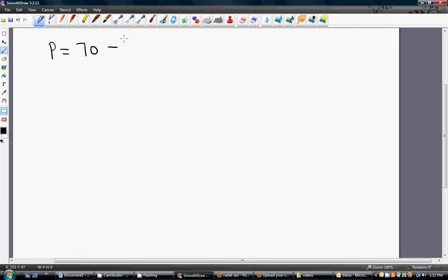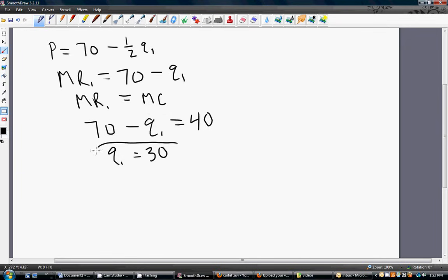Rewriting firm 1's inverse demand equation. Getting marginal revenue for firm 1. And now setting marginal revenue equal to marginal cost. Marginal cost is just 40, just like the Cournot problem we did. Solving for Q1, firm 1 wants to produce 30 units of output.